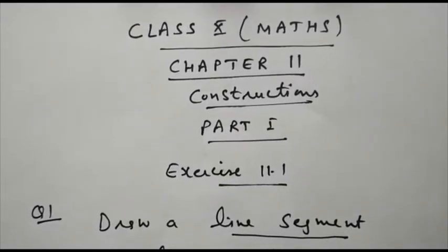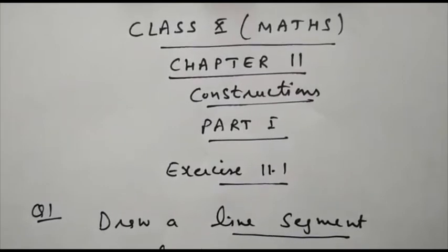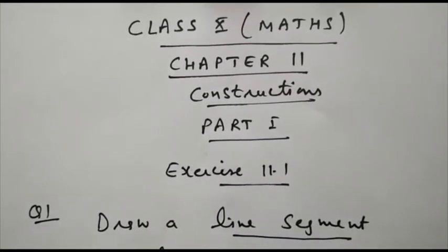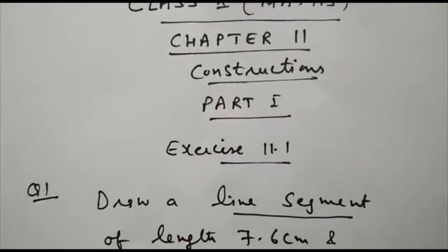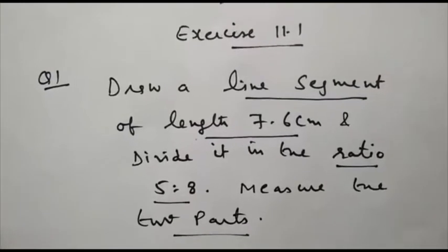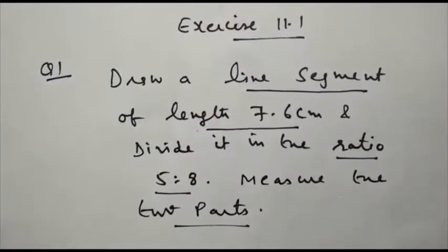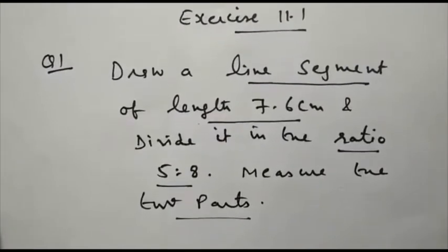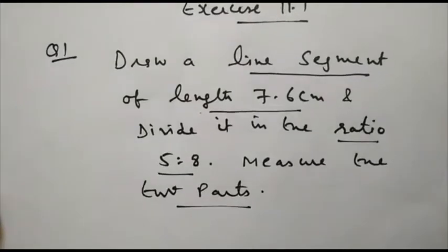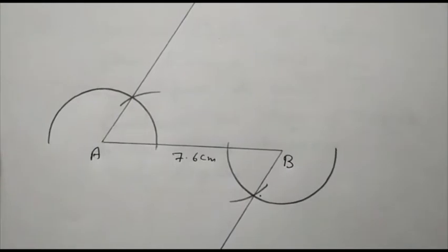Hello students, now we are going to start with the next chapter 11, that is Geometrical Constructions. I am taking its Part 1 with Exercise 11.1, Question number 1: draw a line segment of length 7.6 centimeter and divide it in the ratio 5:8 and measure the two parts. So here we will draw the construction.